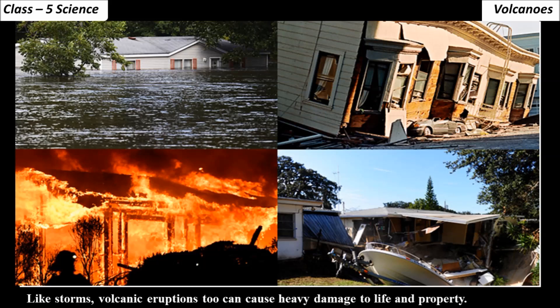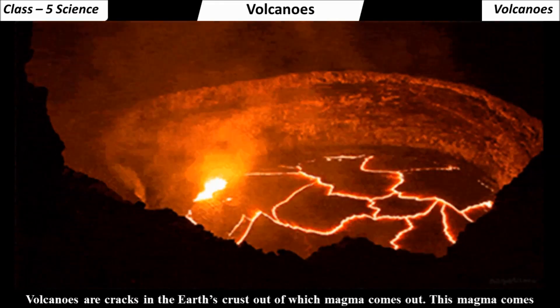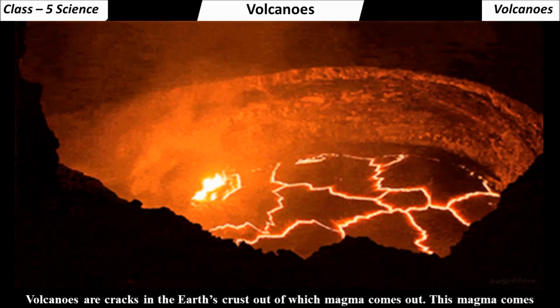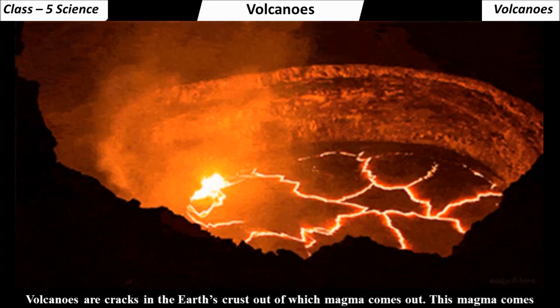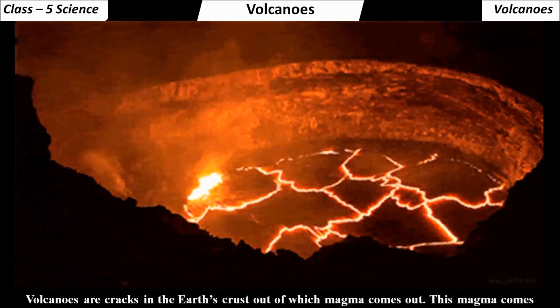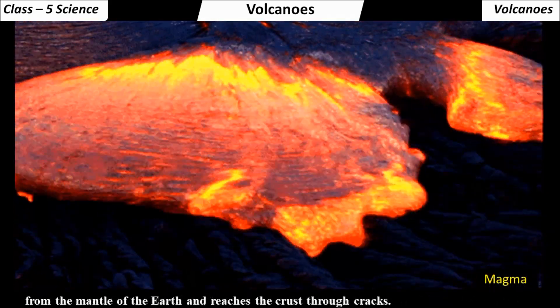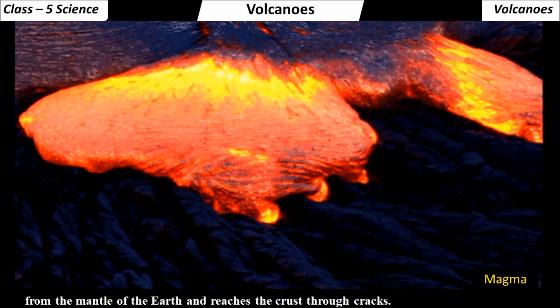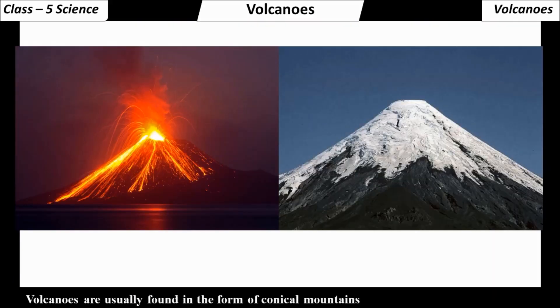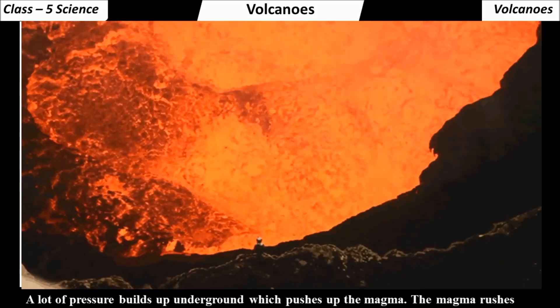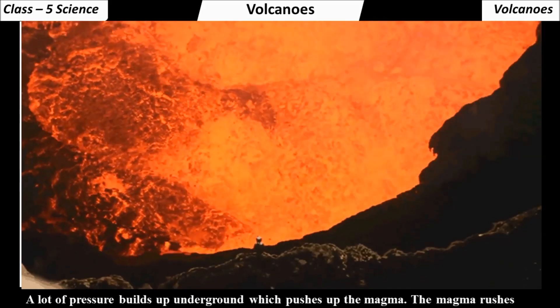Let us learn more about volcanoes. Volcanoes are cracks in the earth's crust out of which magma comes out. This magma comes from the mantle of the earth and reaches the crust through cracks. Volcanoes are usually found in the form of conical mountains. A lot of pressure builds up underground, which pushes up the magma.